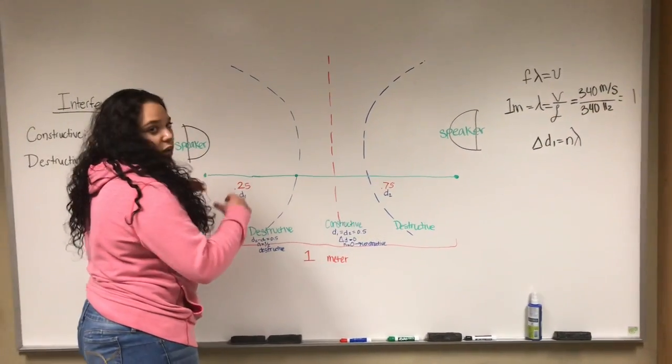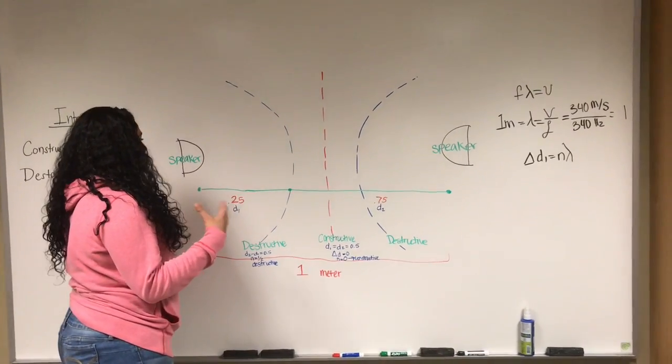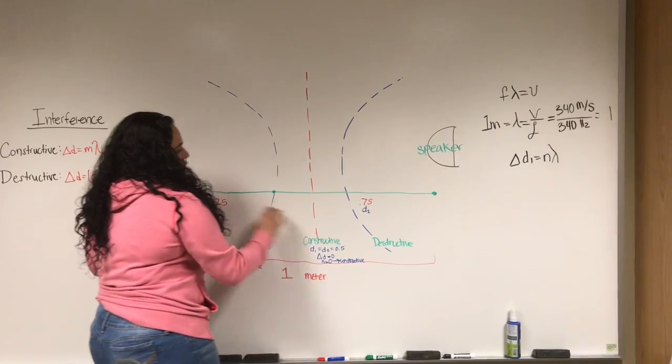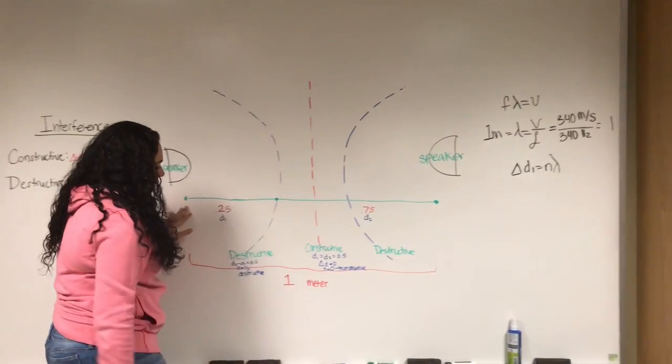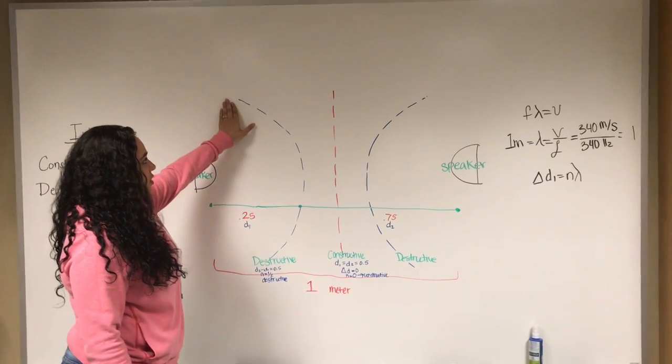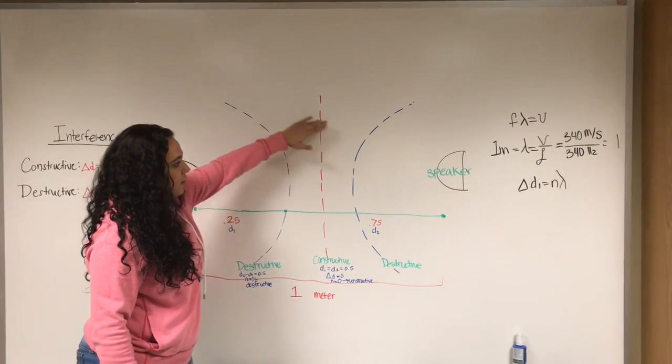Okay guys, so basically this is our setup for our experiment, what we did. Here are the two speakers. This is the ruler demonstrating the length, which is one meter. And so basically this is the destructive, the pattern of the destructive and constructive and again the destructive.